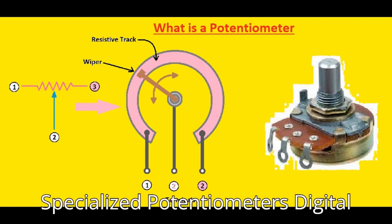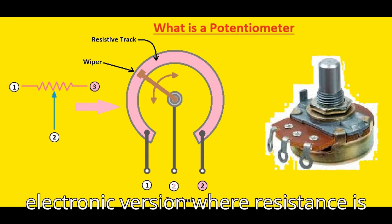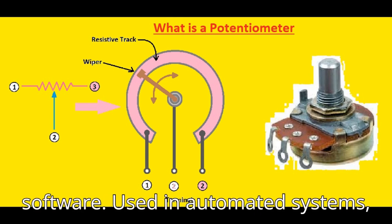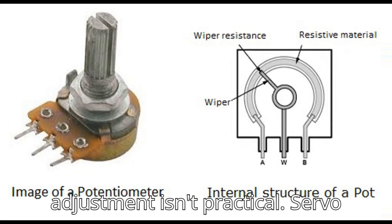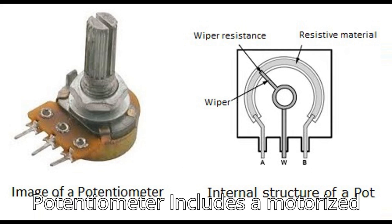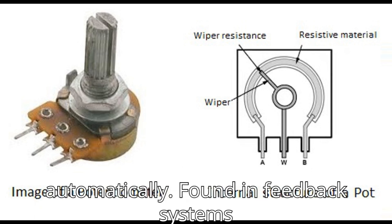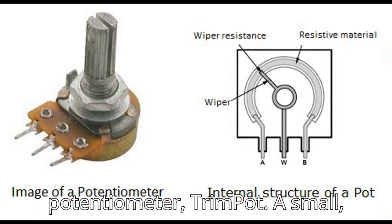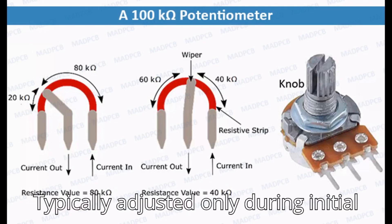Specialized potentiometers include the digital potentiometer, an electronic version where resistance is adjusted using digital signals controlled via microcontrollers or software, used in automated systems, precision circuits, or where physical adjustment isn't practical. The servo potentiometer includes a motorized mechanism to adjust the wiper position automatically, found in feedback systems or remotely controlled devices. The trimmer potentiometer (trim pot) is a small, adjustable potentiometer used for calibration or fine-tuning circuits, typically adjusted only during initial setup or maintenance.